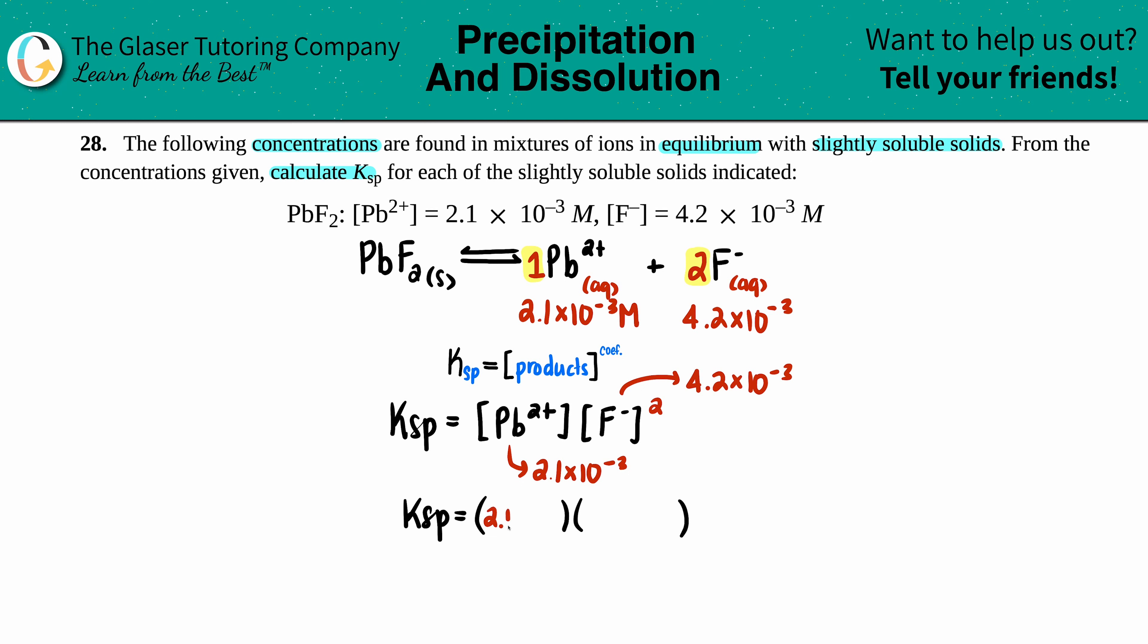Okay, now let's just plug in and solve. Ksp equals 2.1 times 10 to the negative third, and then we have 4.2 times 10 to the negative third, and that has to be squared. You could plug this all into the calculator in one shot or you could do it in sections, whichever one you feel more comfortable with. I'm just going to plug it in one shot. Let's square that and times it by 2.1 times 10 to the negative third, and we get 3.7 times 10 to the negative eighth. No units for Ksp, and that's the end for this one.